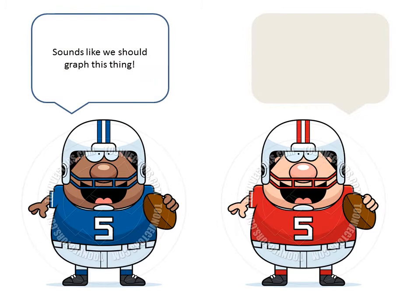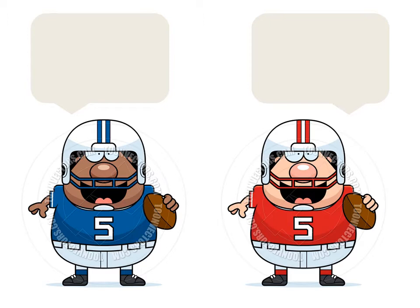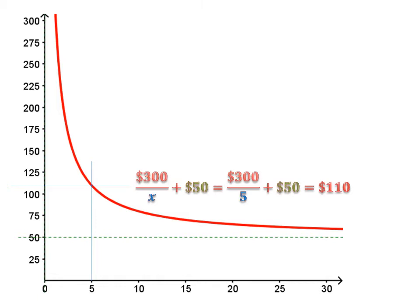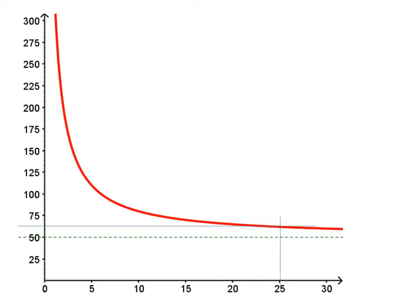Sounds like we should graph this thing. Hey, here's a graph. The horizontal asymptote at $50 represents the cost of the ticket. The cost would never be lower than this. Actually, the cost is always higher than $50 as we'll see in a moment. Suppose we only have five people going. How much will the trip cost? Well, we plug in five for X and we see that it costs $110, which is the output of the function. But if we have 25 people, the cost goes down. Plugging in 25 people for X gives us $62, the new output of the function.